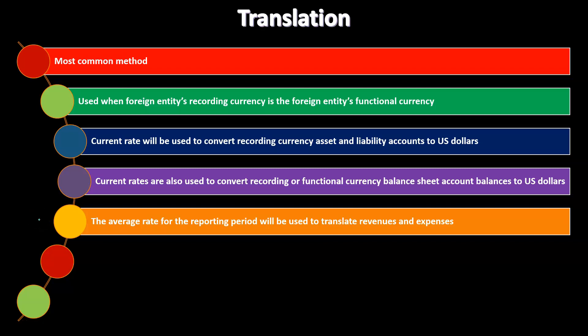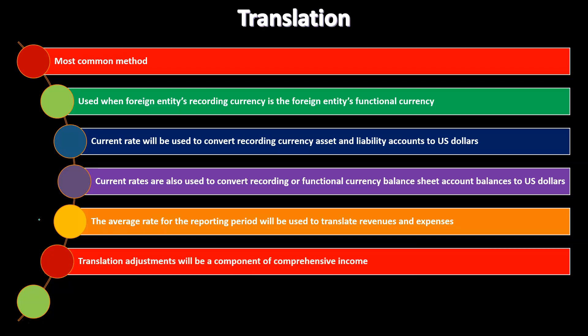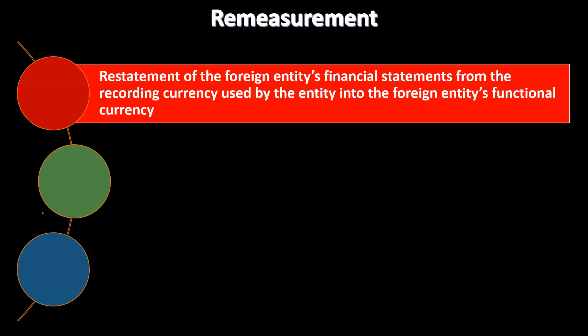The average rate for the reporting period is used to translate revenues and expenses, since these span a time frame and an average rate better approximates activity over that period rather than just the end date. Translation adjustments resulting from using different rates — the balance sheet date rate versus the average rate — will be a component of comprehensive income rather than the income statement. This method is called the current rate method.